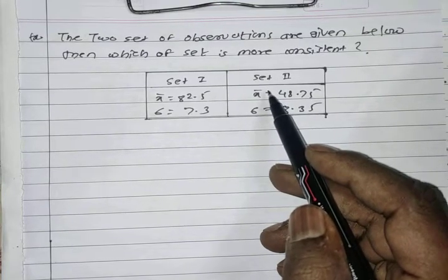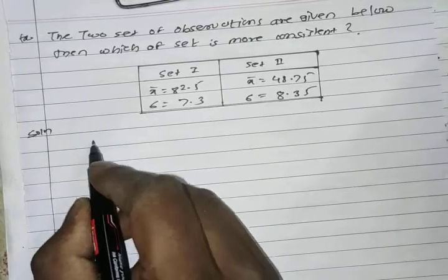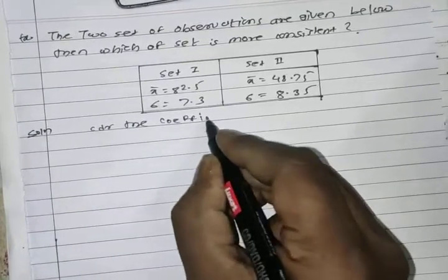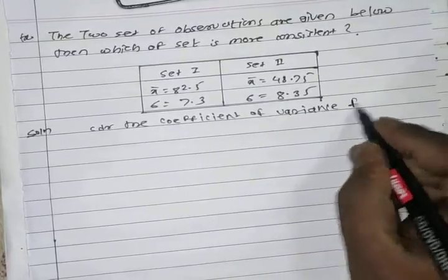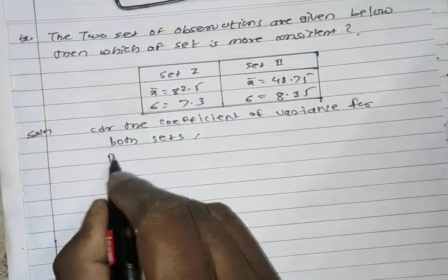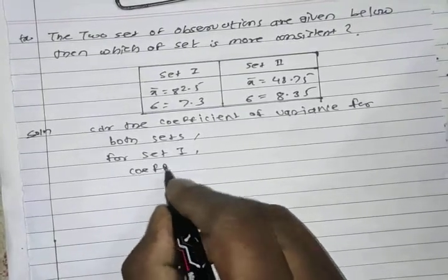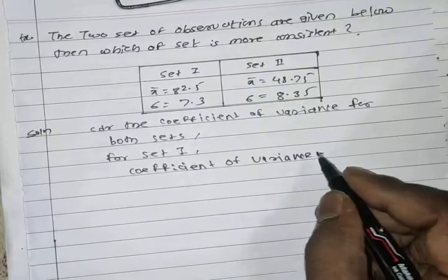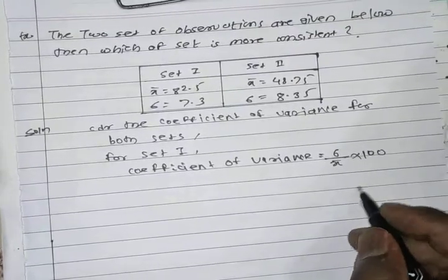So now first we will find the coefficient of variance for both sets. The formula for coefficient of variance is: sigma upon x-bar, multiplied by 100.